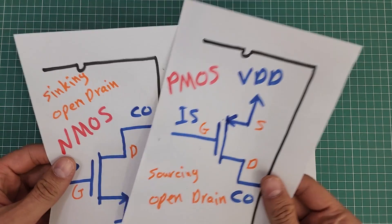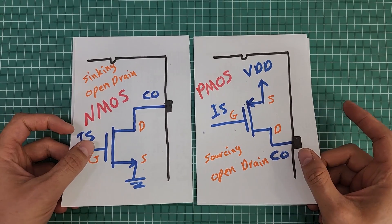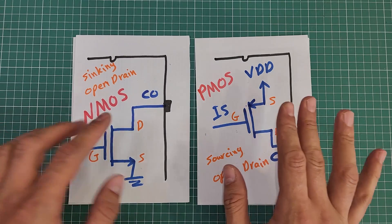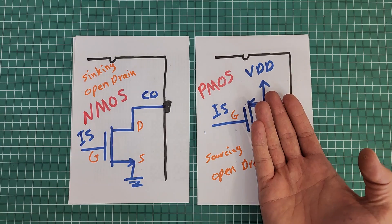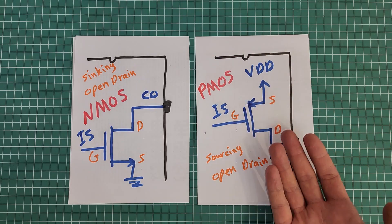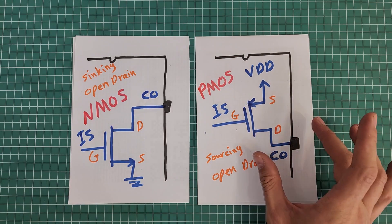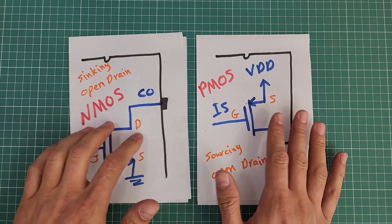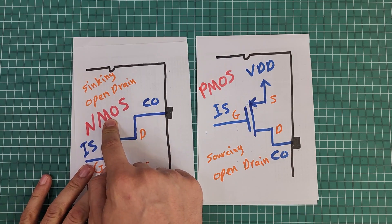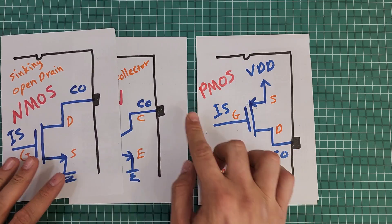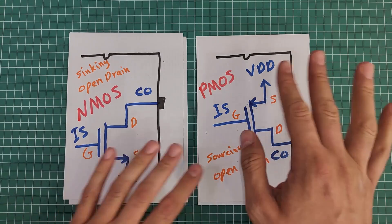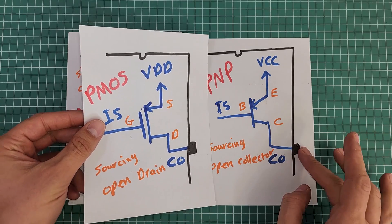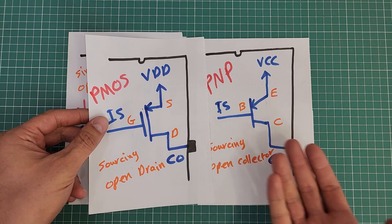There is a similar situation with open drain outputs. Open drain outputs can be made using NMOS transistors or PMOS transistors. Similarly, NMOS open drains are more common. By looking at these diagrams, you can see that PMOS open drains connect the output to VDD — the source voltage — when active and leave the output in the air when inactive. In this video we will ignore PMOS open drains because they are rarely used. NPN type open collectors and NMOS open drains are called sinking type outputs because they connect the output to ground when active. PNP type open collectors and PMOS open drains are called sourcing type outputs because they connect the output to source voltage when active.